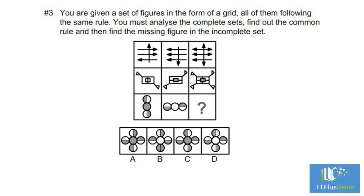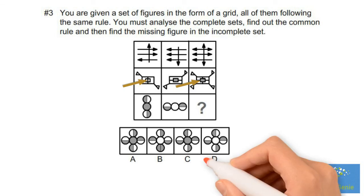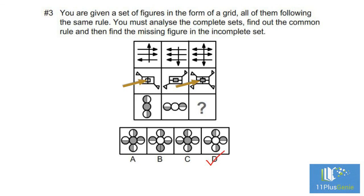In row two, if the first figure is on top of the second figure, then this line must be visible in figure three. We can conclude that the second figure is placed on top of the first one. The circle in the middle must be white, and the left half of the top circle must be grey. The correct answer is D.